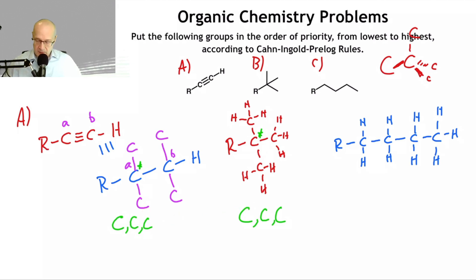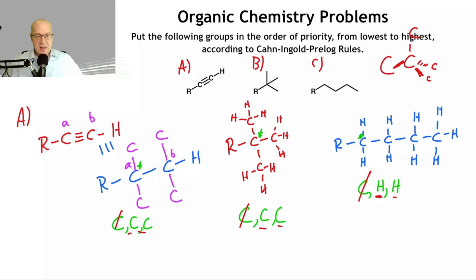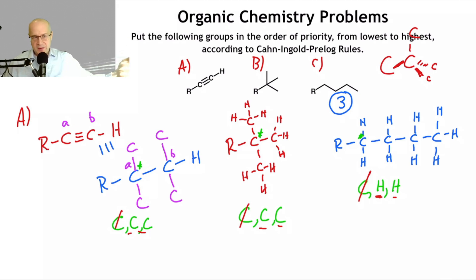Jumping out from the third branch, we find carbon, hydrogen, hydrogen. That's our first difference. The other two branches give carbon, carbon, carbon — but this one gives carbon, hydrogen, hydrogen. Hydrogen has a lower atomic number than carbon, so group C is the lowest priority — priority group three. It doesn't mean it's unimportant to the structure; it just means it's a low-priority group when assigning priority.